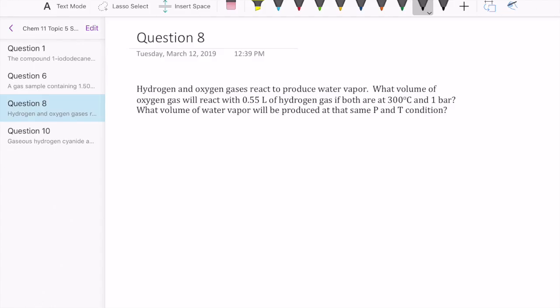Okay, let's take a look at question 8 in topic set 5. They're asking what volume of oxygen gas will react with a certain amount of hydrogen gas if both are at 300 Celsius and one bar, and then how much water will be produced at the same pressure temperature condition.